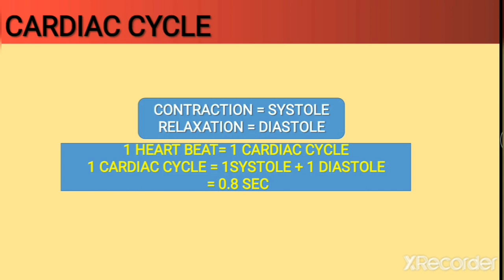Before explaining the cardiac cycle, let me clarify some important terms. When the heart contracts, it is called systole in scientific language. When the heart relaxes, it is called diastole. So contraction = systole and relaxation = diastole. One complete heartbeat is the same as one cardiac cycle, and it is completed in 0.8 seconds. Since there are 60 seconds in a minute, our heart beats 72 times per minute.